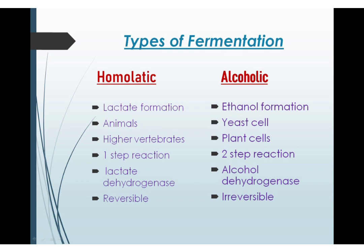Now let me clarify the difference between homolactic and alcoholic fermentation. The mechanism of both fermentations is quite similar, but there are certain differences to keep in mind. The first and foremost difference is that in homolactic fermentation lactate is produced, while in alcoholic fermentation ethanol is produced. Ethanol cannot be produced in the human body, so alcoholic fermentation occurs in yeast cells or plant cells, while homolactic fermentation occurs in animals or higher vertebrates.